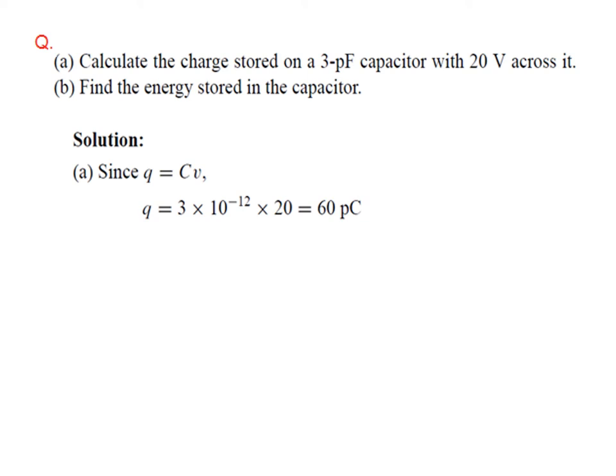And since we have the voltage, we can find the energy, half CV square. 1 over 2, C is 3 pF. Multiply by 20 square, which becomes 400. The net energy stored is 600 pJ.